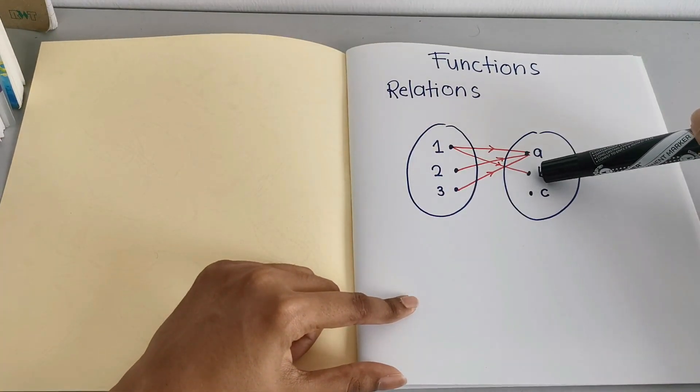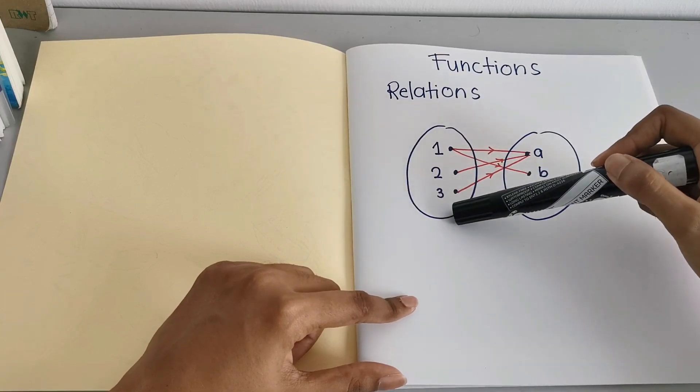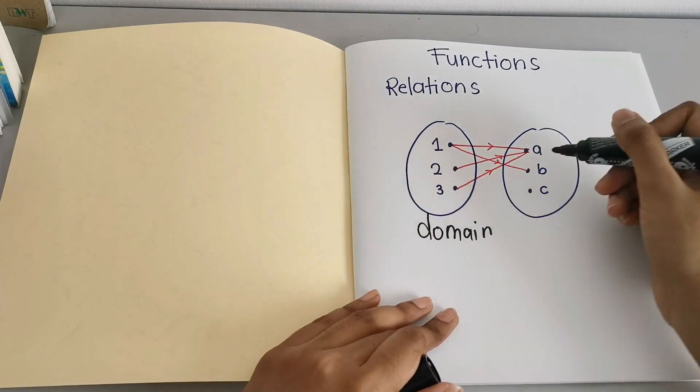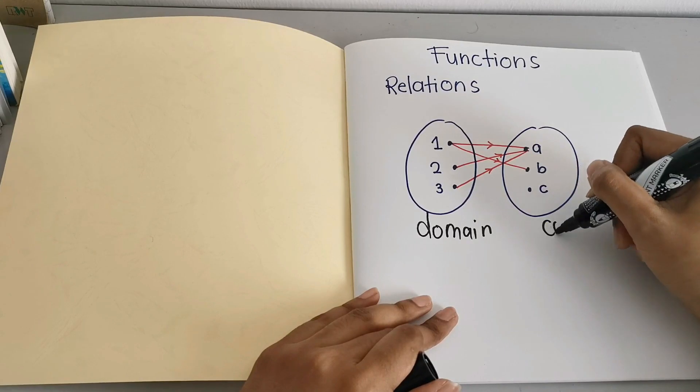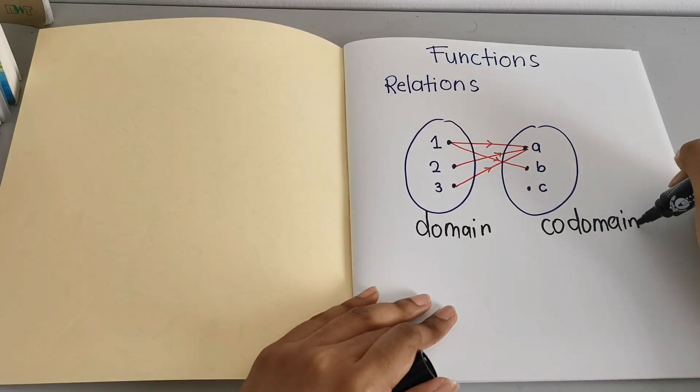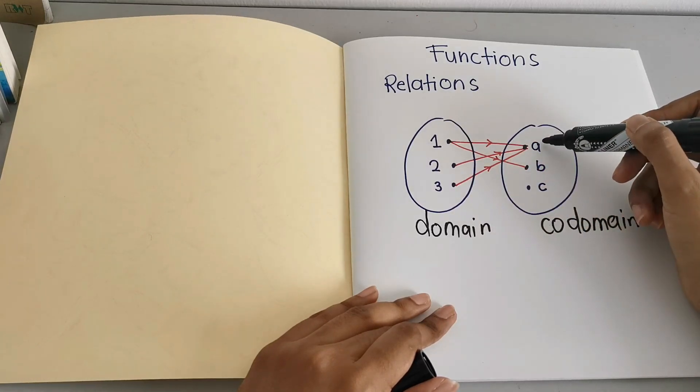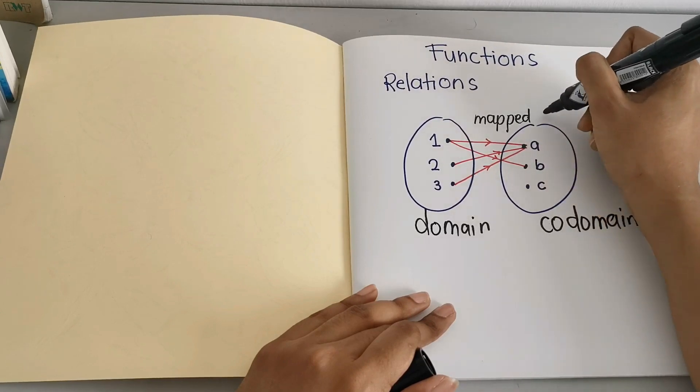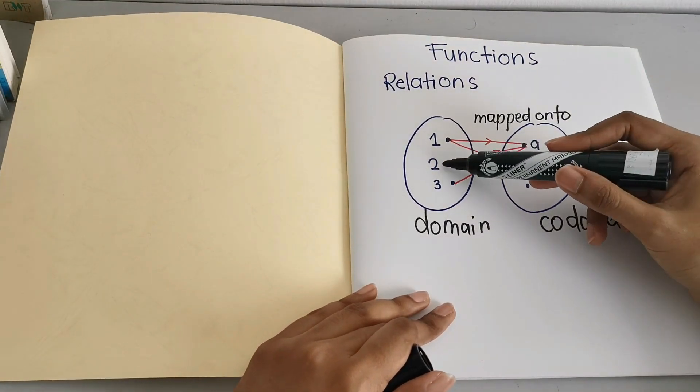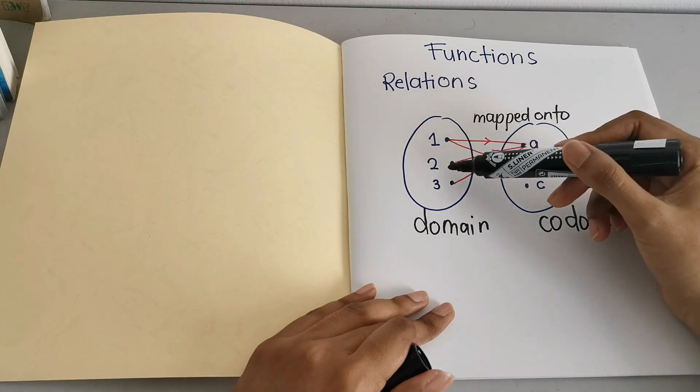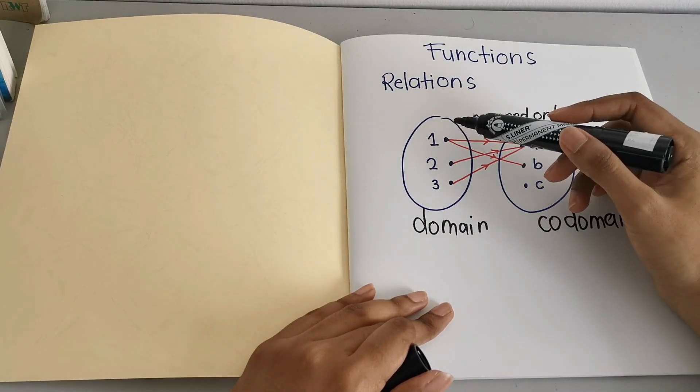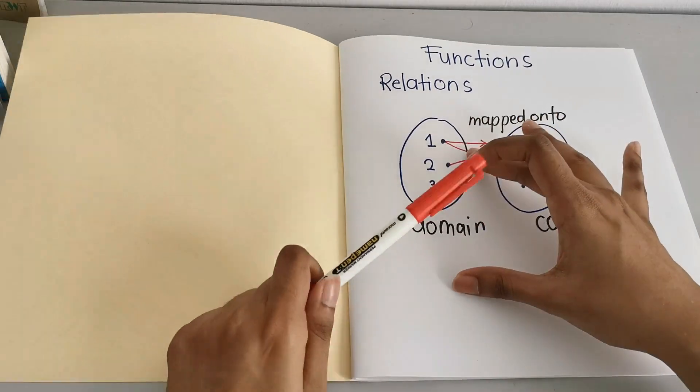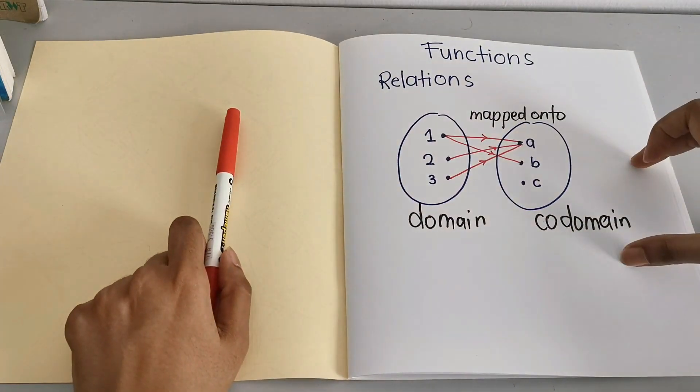This part here is called the domain, and this which part is mapped is called the codomain. Now as you can see, 1 is mapped onto A, so the arrow here we state as mapped onto. So number 2 is mapped onto A, number 3 is mapped onto A, number 1 is also mapped to B. So as we can see, this is domain, this is codomain.